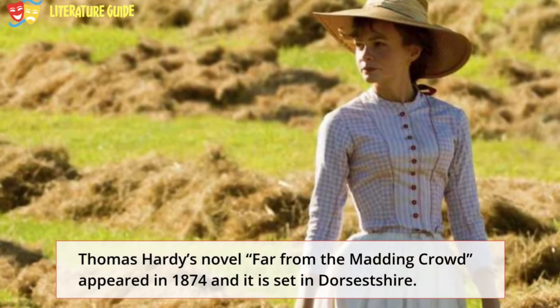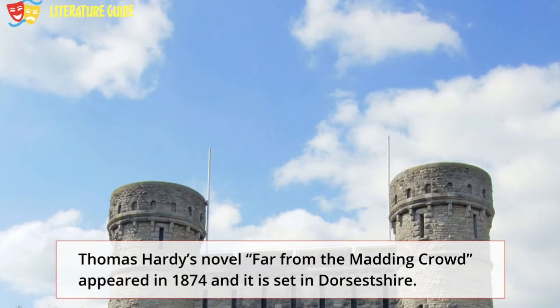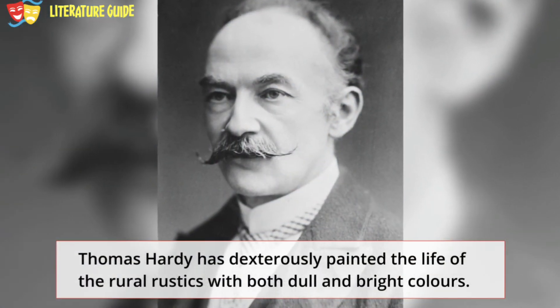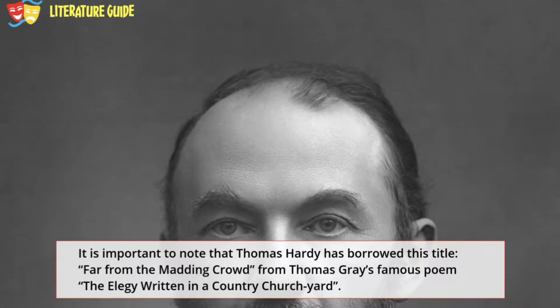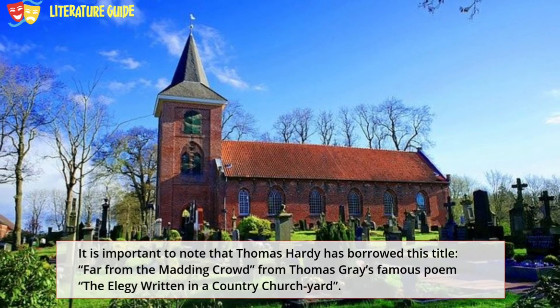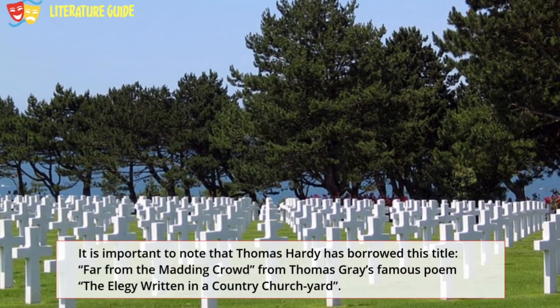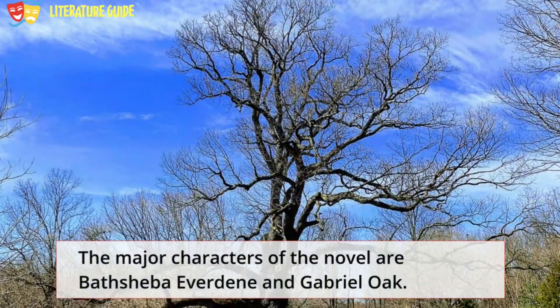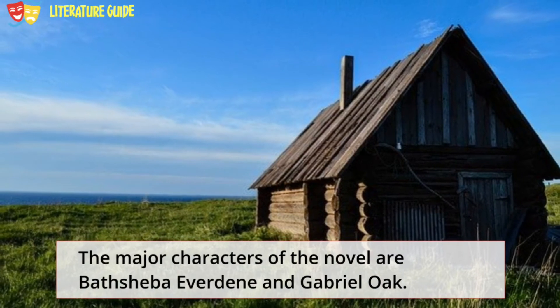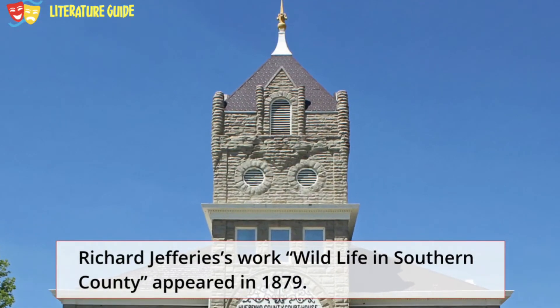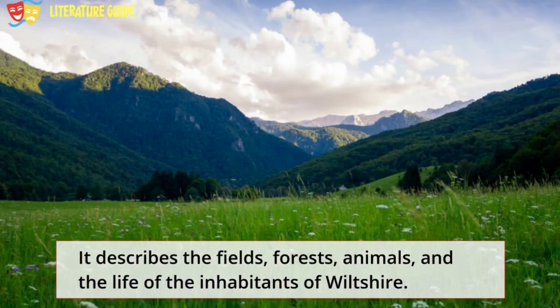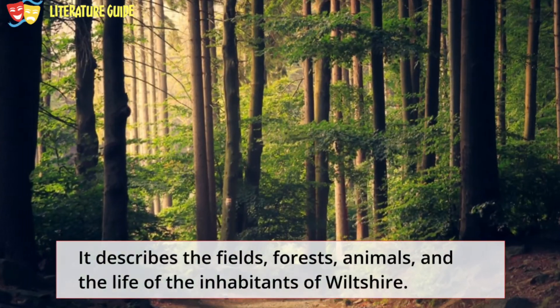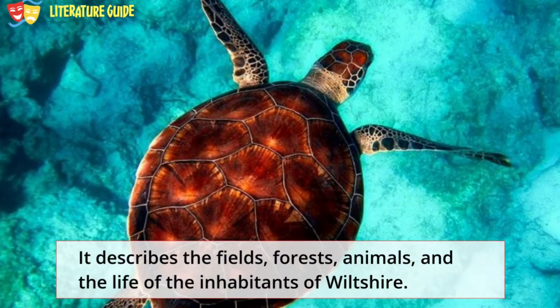Thomas Hardy's novel Far from the Madding Crowd appeared in 1874 and is set in Dorsetshire. Hardy has dexterously painted the life of the rural rustics with both dull and bright colours. The title is borrowed from Thomas Gray's famous poem 'Elegy Written in a Country Churchyard.' The major characters of the novel are Bathsheba Everdene and Gabriel Oak. Richard Jefferies' work Wild Life in a Southern County appeared in 1879 and describes the fields, forests, animals, and the life of the inhabitants of Wiltshire.